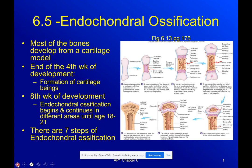Endochondral ossification: most bones develop from a cartilage model. At the end of the fourth week of development — when you're still in your mother's womb as a one-month-old — you have the formation of cartilage that's beginning.